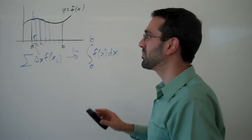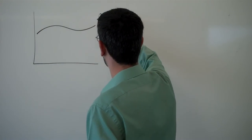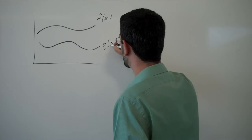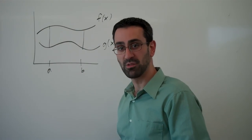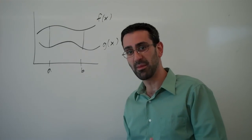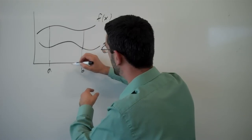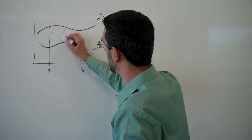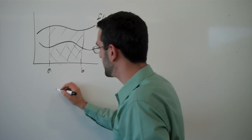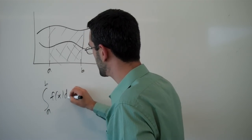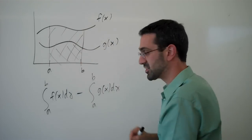We can then extend that idea to more complicated functions. For example, if we had two functions — some f of x and some g of x — and we had some interval a to b, and we wanted to find the area between the two curves bounded by those curves, one way to think about that is to imagine a large area under the f of x function, and then subtract the smaller area under the g of x function. So that would be the integral of f of x dx minus the integral of g of x dx, and this would work just fine.